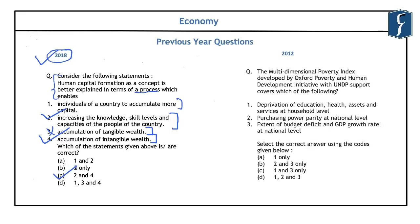Both these previous year questions highlight the importance of going through NCERTs and the important concepts discussed therein. A 2012 question was related to the multi-dimensional poverty index developed by the Oxford Poverty and Human Development Initiative with UNDP support. The MPI includes deprivation of education, health, assets and services at the household level. The correct answer is A, that is 1 only.